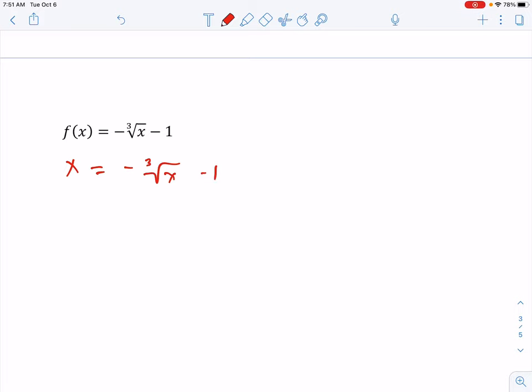Get the radical or the cube root by itself. Let's see. We're going to add 1 to both sides. So I have x plus 1 equals negative cube root. Oh, that's supposed to be a y. It's supposed to be a y in there, right? We switched our x and our y.